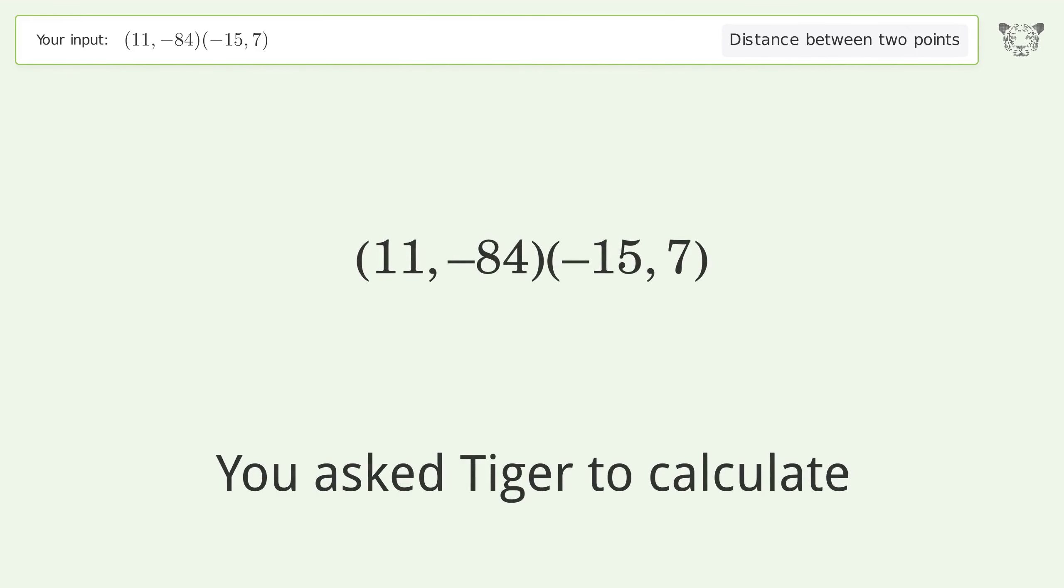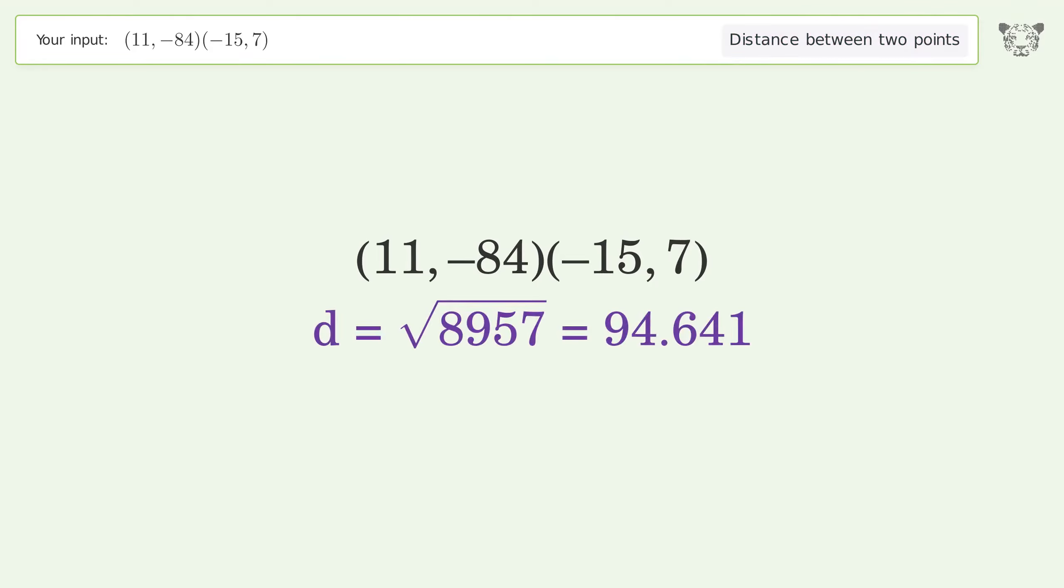You asked Tiger to calculate the distance between two points. The distance between the two points is the square root of 8957, or 94.641.